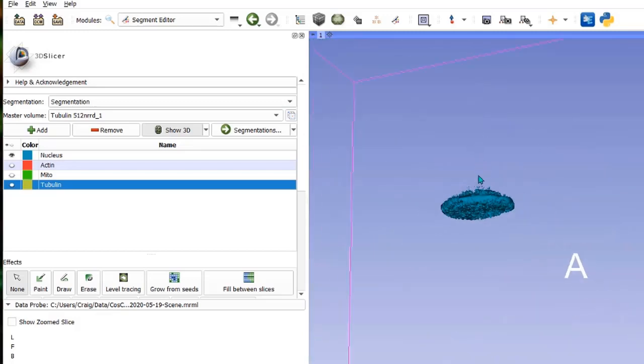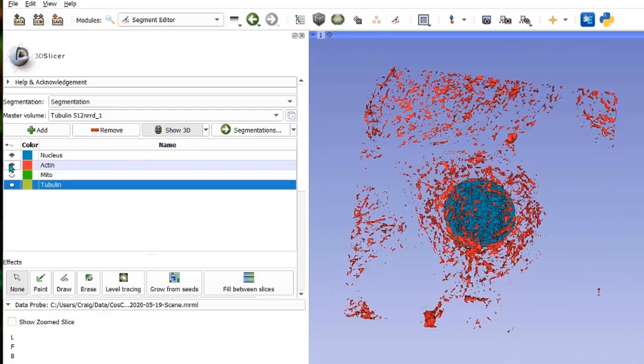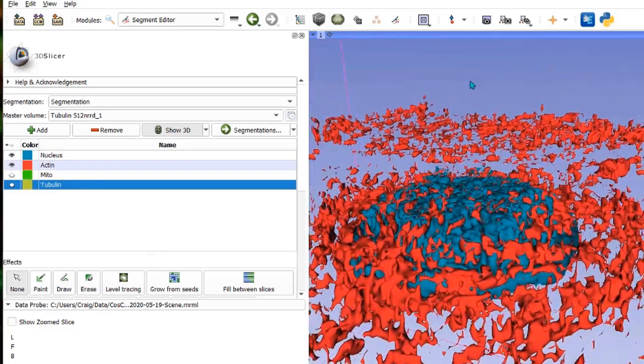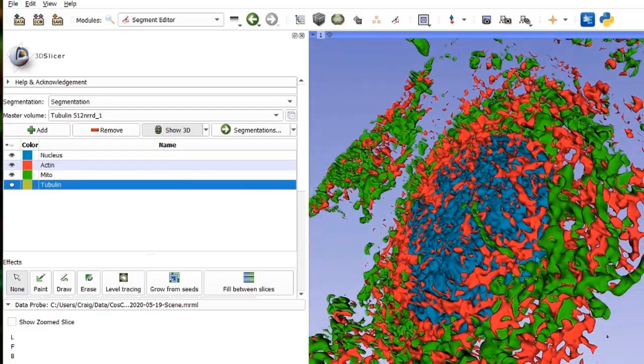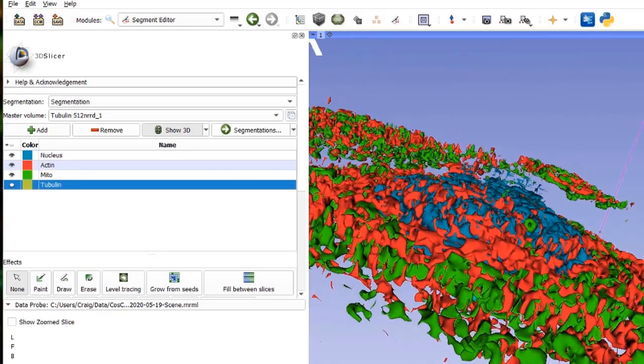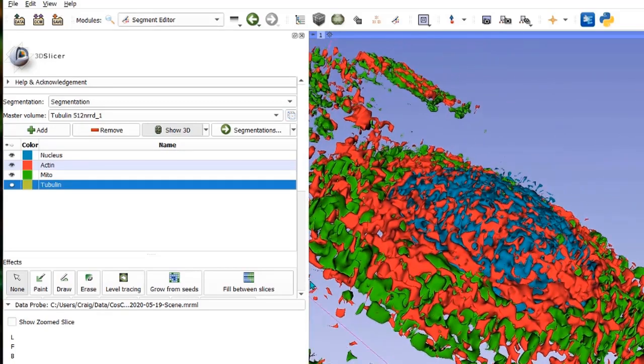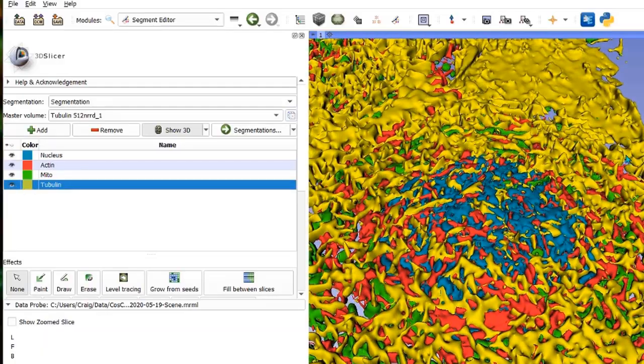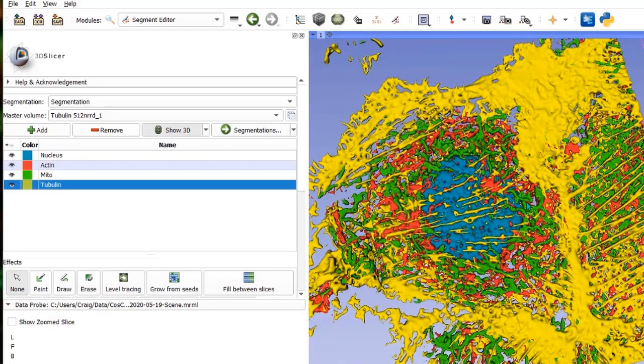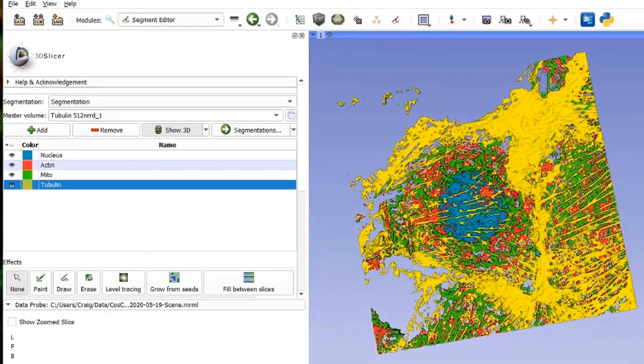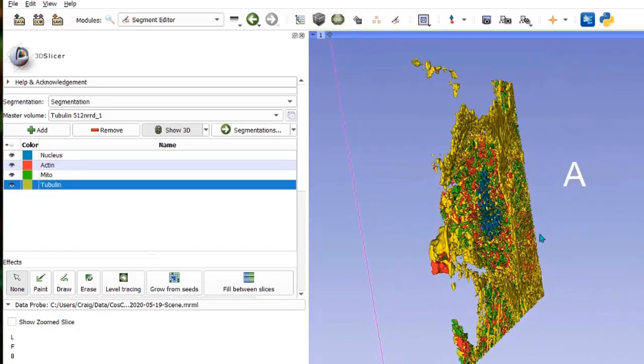Having already thresholded and segmented the other three channels, I can now bring them in one at a time. Here's the actin. We can see the mitochondria. And then finally the tubulin. I've got another tutorial on the channel called 3D Slicer Thresholding and Segmentation that details this part of the process. We can now export these segmentations to other packages.